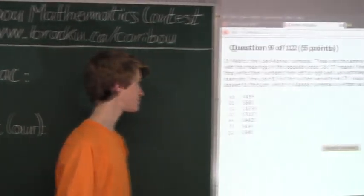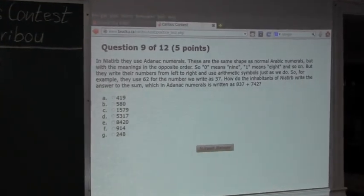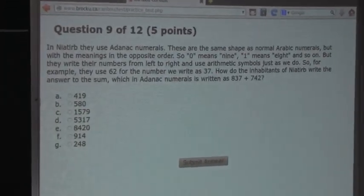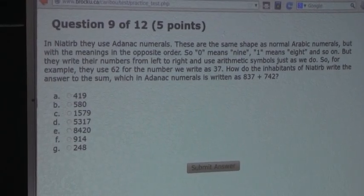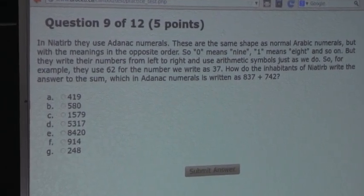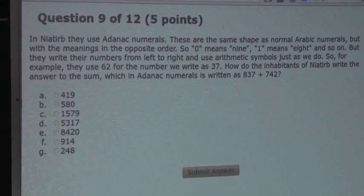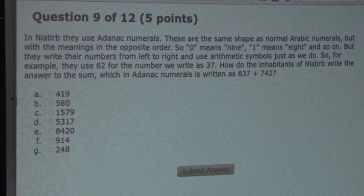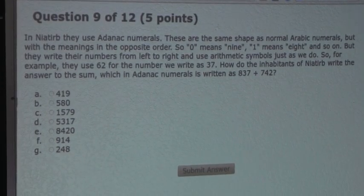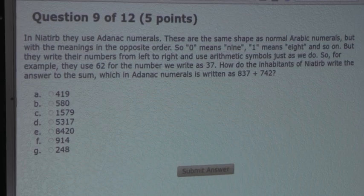So, the question is: In Neoterp, they use Adenac numerals. These are the same shape as normal Arabic numerals, but with the meanings in the opposite order. So 0 means 9, 1 means 8, and so on. But they write their numbers from left to right and use arithmetic symbols, just as we do.